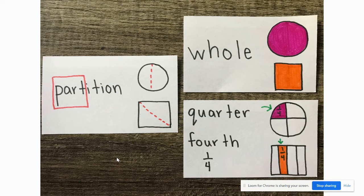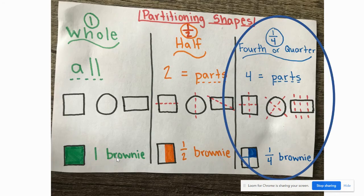So if we have a whole that is divided into quarters, that means it's broken up into four equal parts. We can call each of those parts a quarter or a fourth. So we're living and breathing again in this far right side of our anchor chart on partitioning shapes.